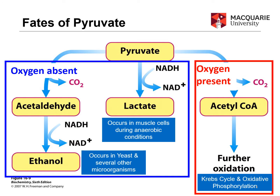We had a look in some of the early videos on how we take pyruvate and it can go through conversion to acetyl-CoA and then further oxidation via the Krebs cycle and oxidative phosphorylation if there's oxygen present. Today what we're going to have a look at is what happens if oxygen is absent — anaerobic metabolism of pyruvate to lactate — and that is actually called the Cori cycle. It occurs in muscle cells when you've depleted all the oxygen within the muscle cells.